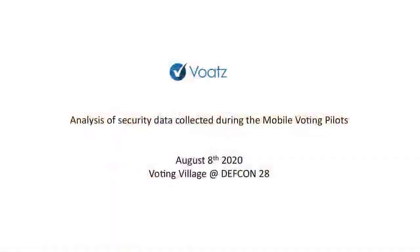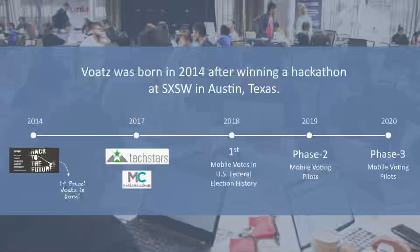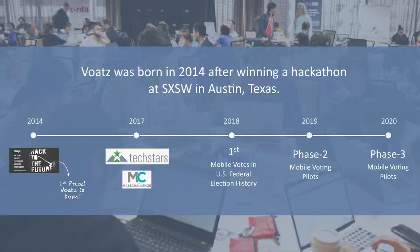Good afternoon, everybody. My name is Nimit. I'm one of the co-founders at Votes, and I'm here to talk about some of the security data we've collected during the course of our mobile voting pilots over the last couple of years. Votes is the youngest elections company in the U.S. We got started almost by accident after winning a hackathon at South by Southwest in Austin, Texas, back in 2014.